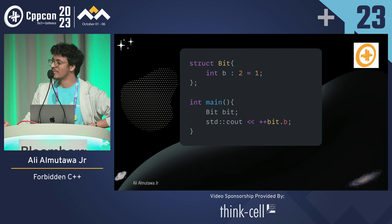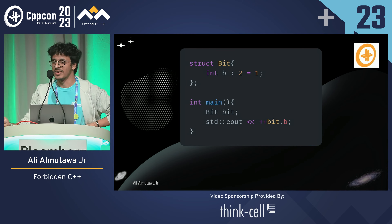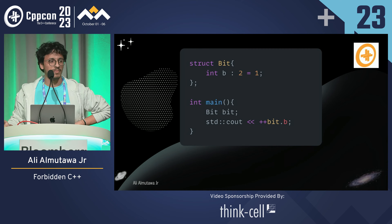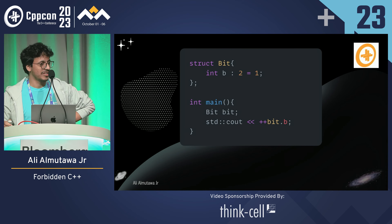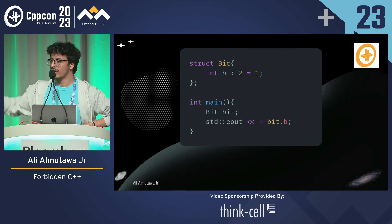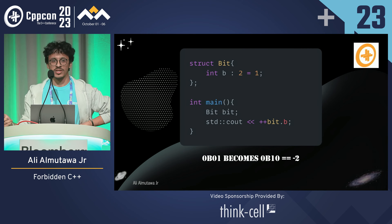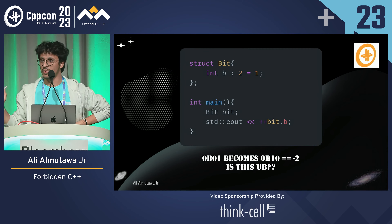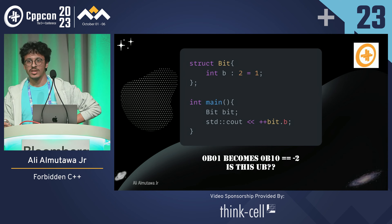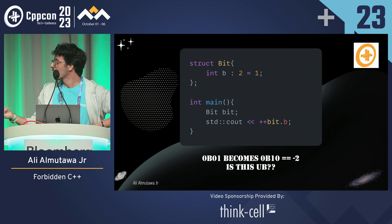I have a struct with a bit field and I'm setting it equal to 1. I'm adding to that bit field and printing it. Does it compile and what is the output? This does compile. It is 1, and you add 1 to it — it overflows to negative 2. But the real question is: is this undefined behavior? It could be implementation-defined.